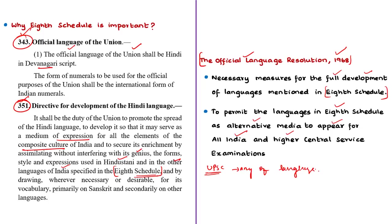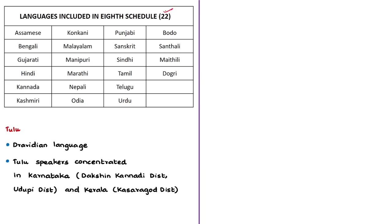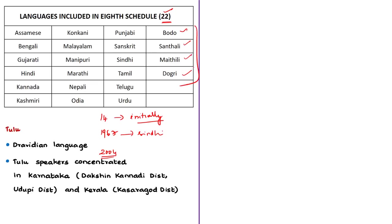At present there are 22 languages included in the Eighth Schedule. Of these, 14 were initially included in the Constitution, then Sindhi was added in 1967. Three more languages — Konkani, Manipuri, and Nepali — were included in 1992. Then in 2004, four more languages — Bodo, Dogri, Maithali, and Santali — were added to the Eighth Schedule.